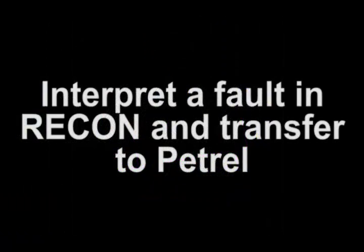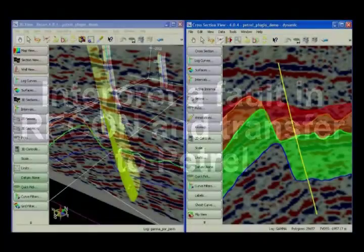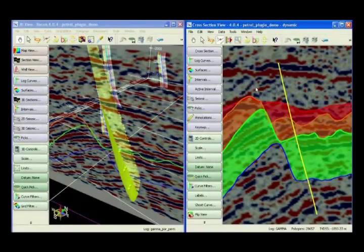We are now going to interpret a new fault utilising Recon's dynamic cross section whilst demonstrating Recon's cascade functionality, and finally transferring the newly interpreted fault back to Petrel.